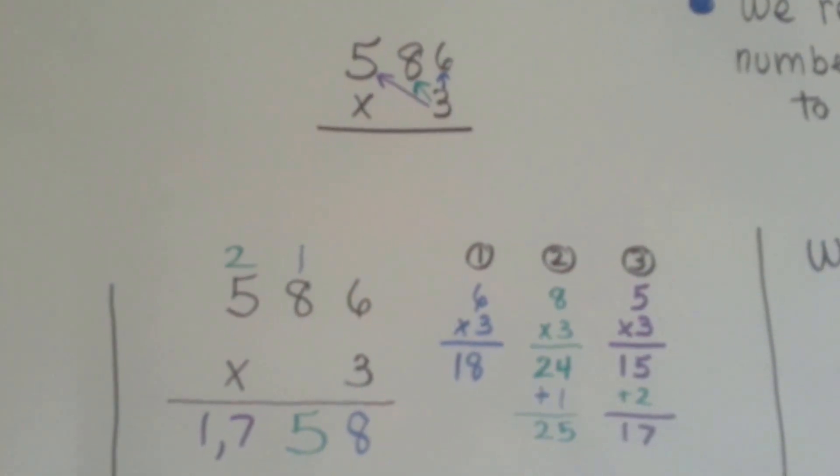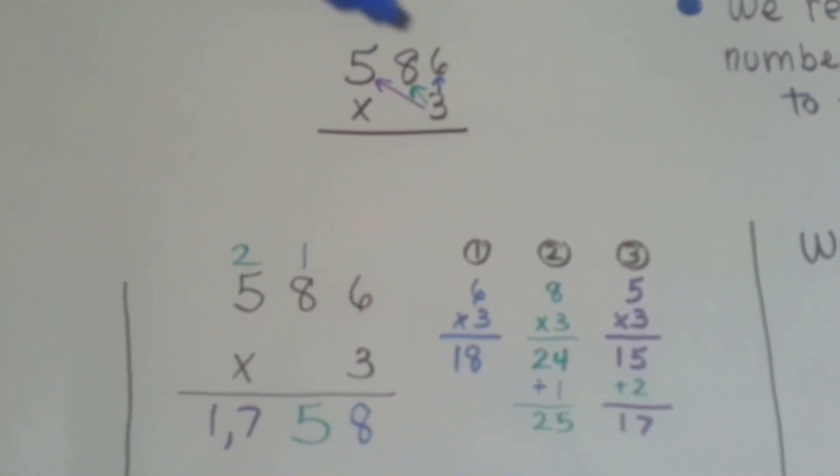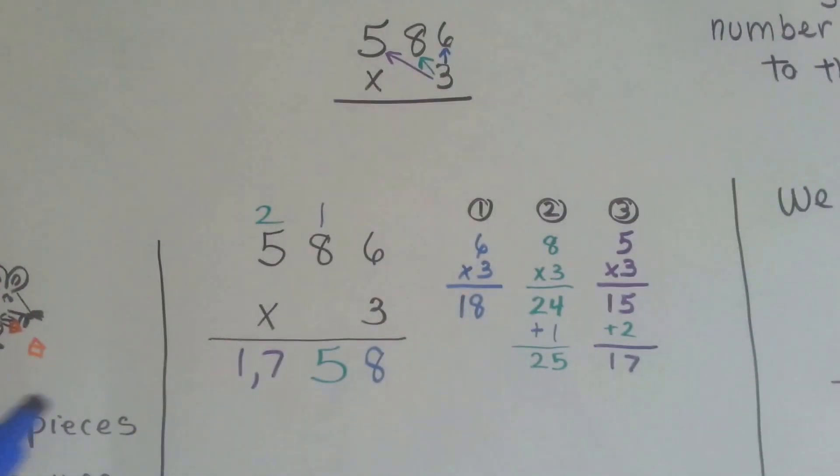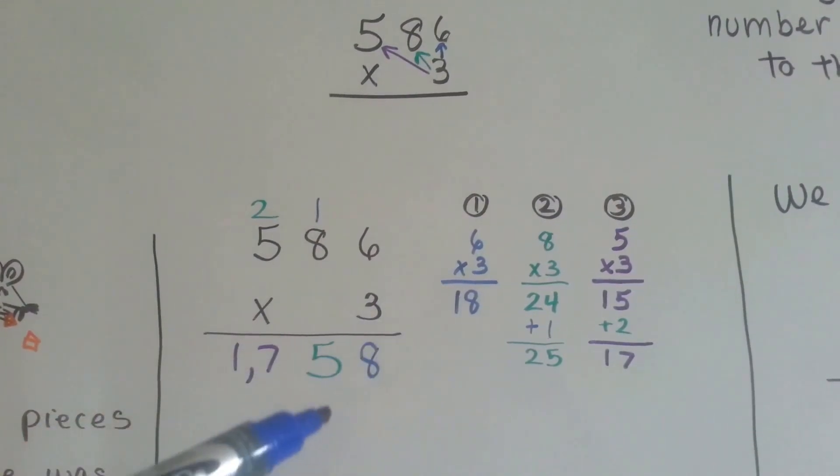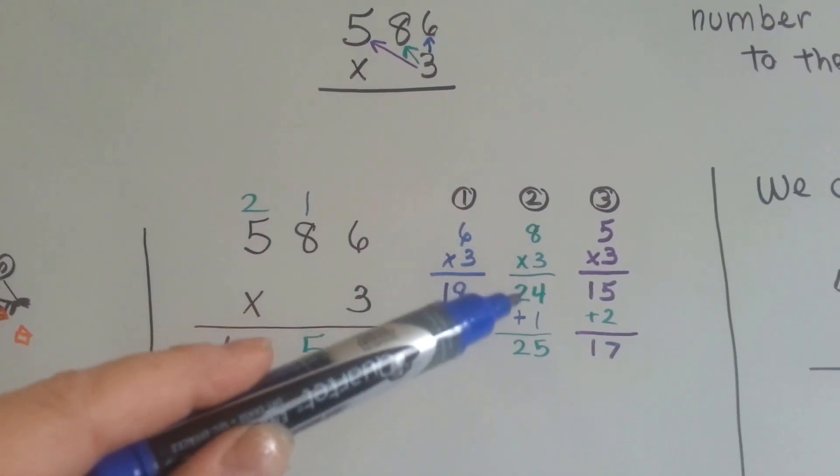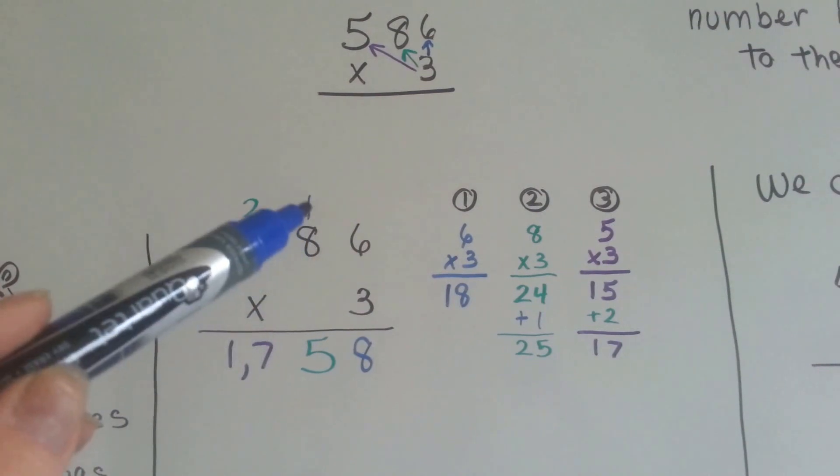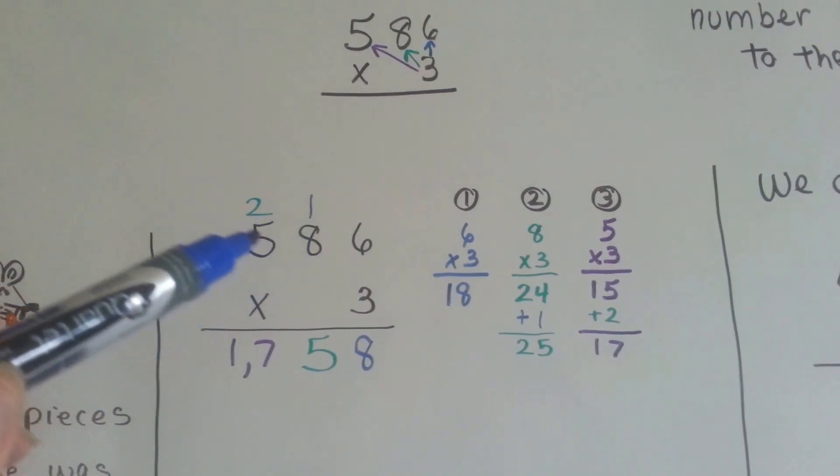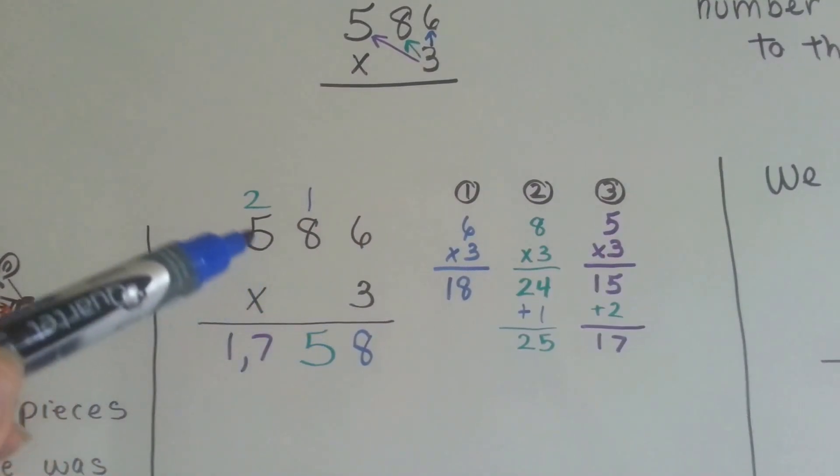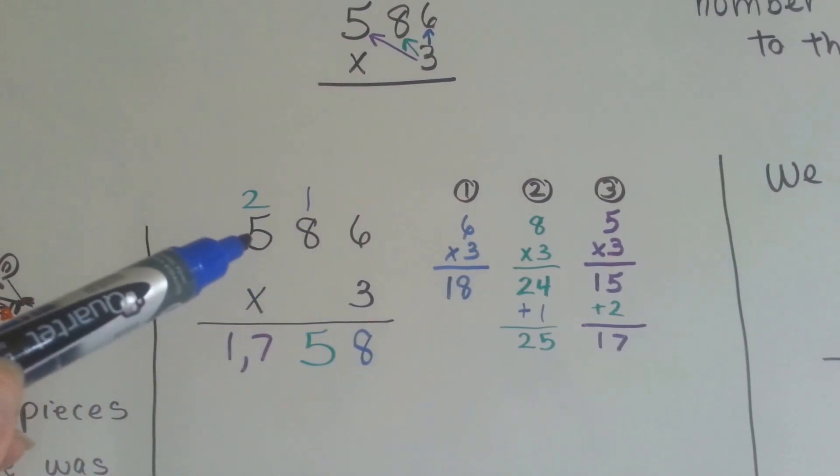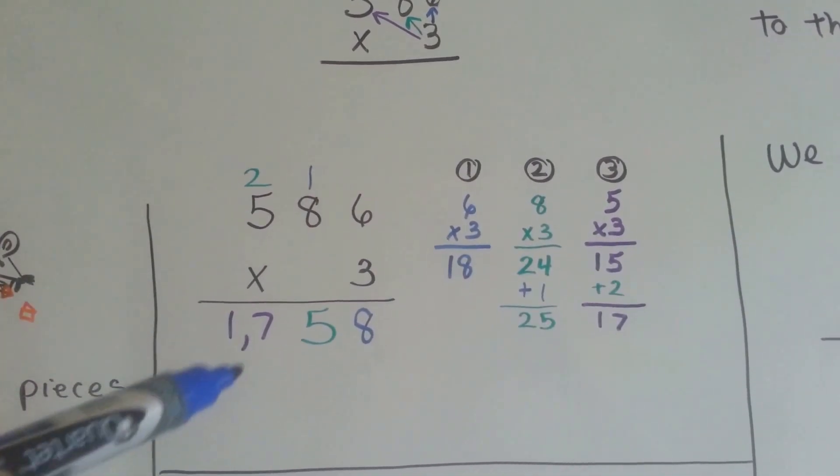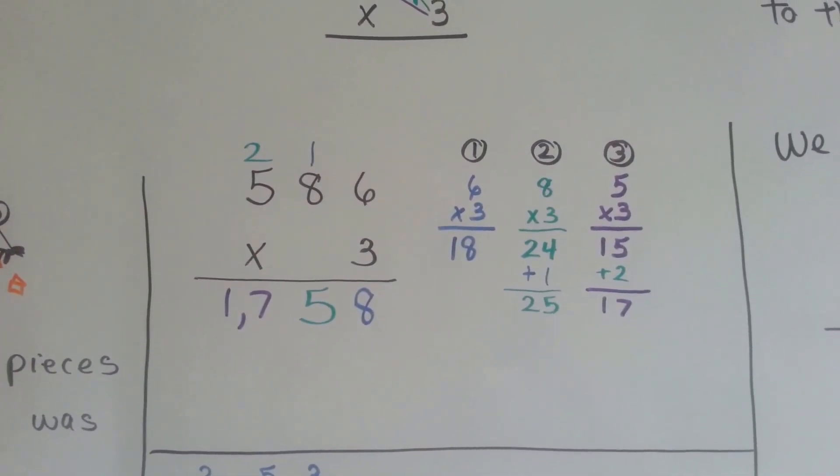So here we have this problem: 586 times 3. We're going to multiply the 1's, then the tens, then the hundreds. So multiplying the 1's, we get 6 times 3, that's the first one. 6 times 3 is 18. We carry the 1 and put the 8 down. Now we have to do 8 times 3, which is 24. But we have to add this 1, so that makes it 25. We carry the 2 over to the hundreds column and put the 5 down. Now we have to multiply 3 times 5. We went boom, boom, and now we're at the hundreds. 3 times 5 is 15, plus the 2 is 17. We put them here. Remember our comma, and we have 1,758.